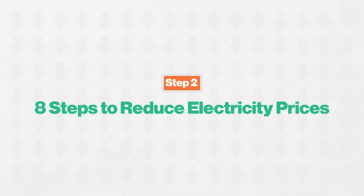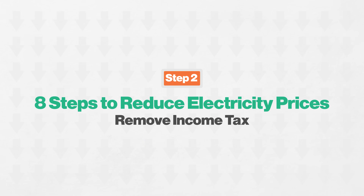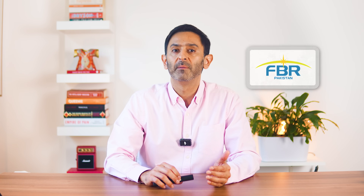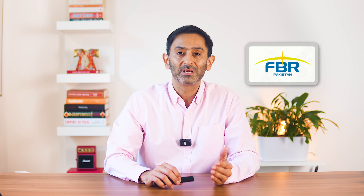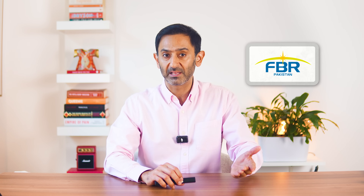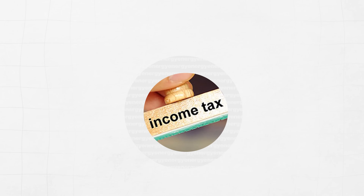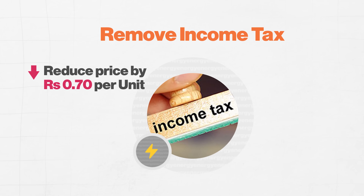The second step is the removal of income tax. In the past year, electricity bills have been collecting Rs.7 per unit as income tax. FBR's approach is that those who are already paying taxes through their bills should be able to get those benefits back. In the past year, electricity bills collected Rs.7 per unit from consumers. The new price would be Rs.47.90 per unit.